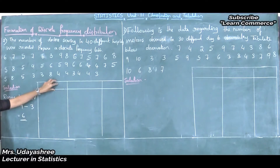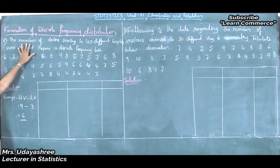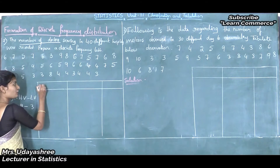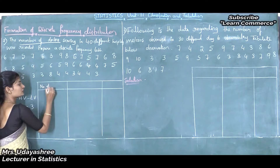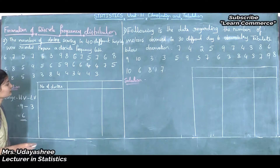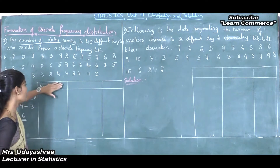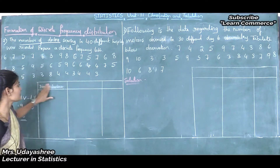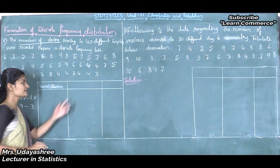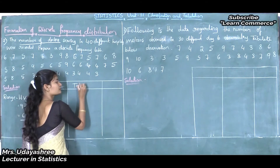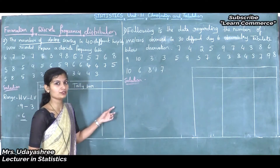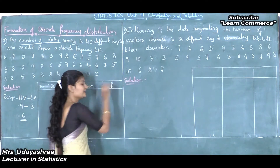The first column is the variable. Here the variable is the number of doctors, and variable is denoted by X, so I will write X. The second column is the tally bar. And the last column is frequency, which is denoted by F, so here I will write F.